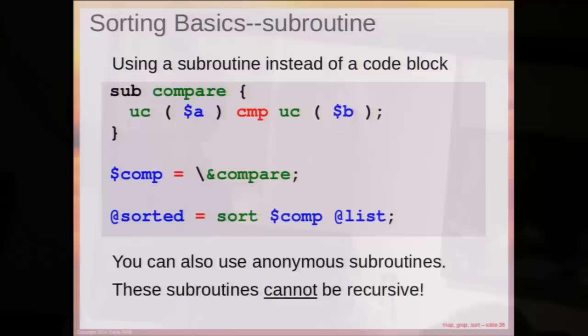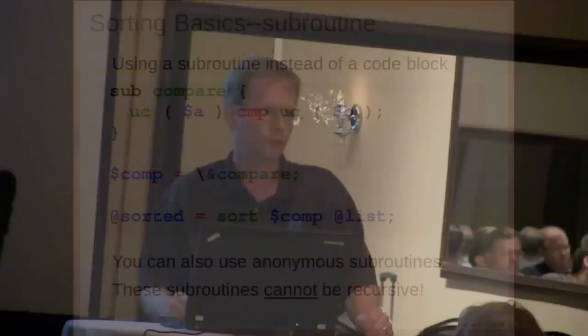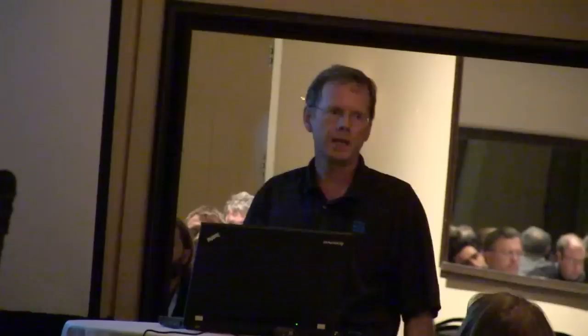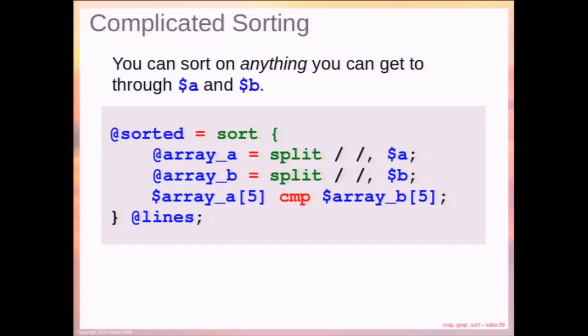If you actually want to use a subroutine — which is rarely done; in 20 years of Perl programming I've never seen anybody use this approach — you create the subroutine using the comparison between a and b, create a reference to it, and give that reference to sort. You can also use anonymous subroutines, but you cannot use recursion. Anything you can get to through dollar a and dollar b you can sort on. For example, if a and b are strings you need to split, you can split them inside the code block, get the arrays, and compare the fifth elements.